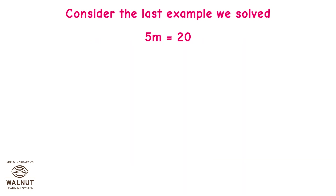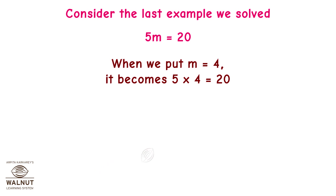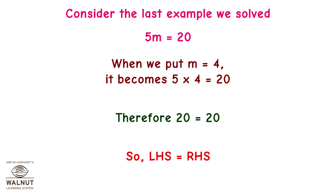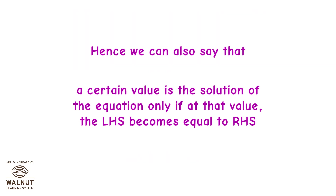Consider the last example: 5m equals 20. When we put m equals 4, it becomes 5 into 4 equals 20, therefore 20 equals 20 — LHS equals RHS. We can say that a value is the solution of the equation only if at that value the LHS becomes equal to RHS.